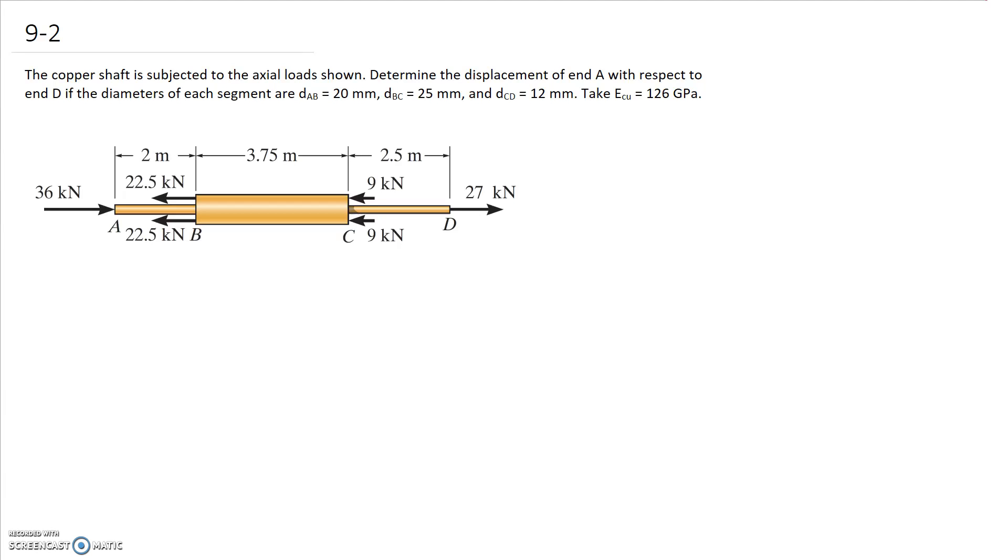So the first step that I'm going to take in this question is to divide it up into the three different sections. So we can see that through the section AB here we should have a constant load and we can also see that the diameter in Young's modulus doesn't change either so there's no need to divide it into any further sections.